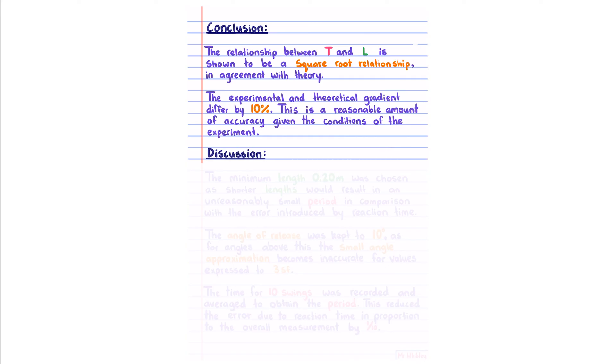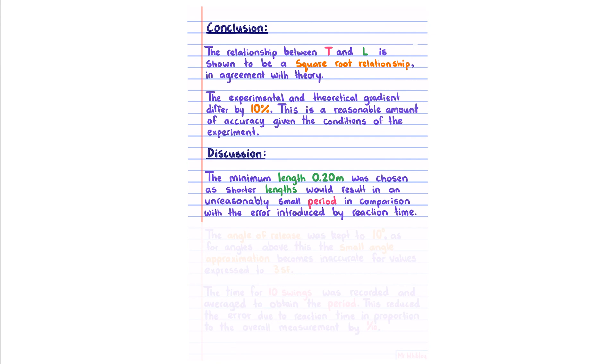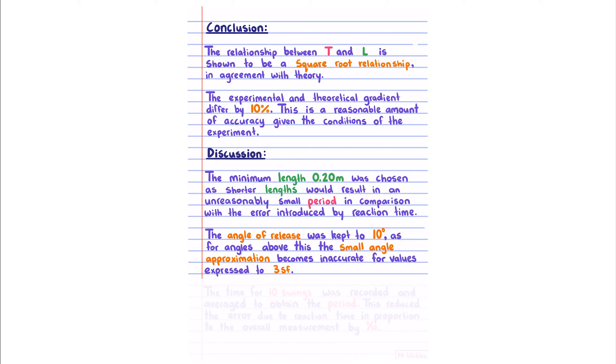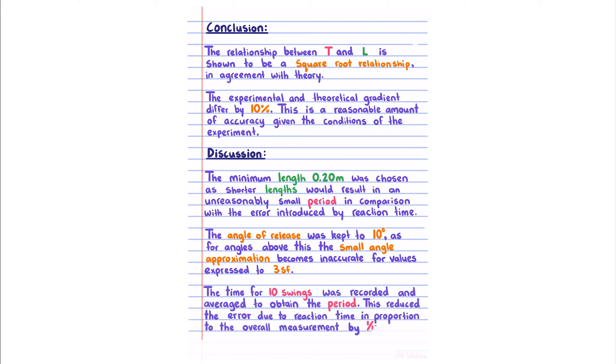Now for our discussion. The discussion is required in order to get your grade to an excellence. My first point is to justify the choice of the independent variable range. The minimum length of 0.20 meters was chosen as shorter lengths would result in an unreasonably small period in comparison with the error introduced by reaction time. Now to justify my accuracy improving techniques. The angle of release was kept to 10 degrees. As for angles above this, the small angle approximation becomes inaccurate for values expressed to three significant figures. Meaning that the equation we're using assumed the small angle approximation, which is only valid for small angles. The time for 10 swings was recorded and averaged to obtain the period. This reduced the error due to reaction time in proportion to the overall measurement by 1 over 10. Meaning that when we divided our value by 10 because we did 10 swings, we also divide the reaction error by 10.